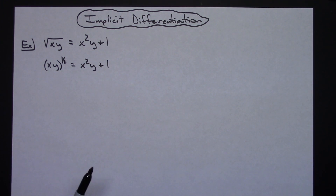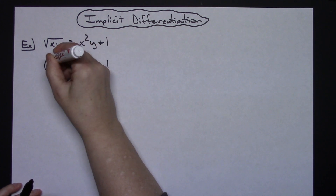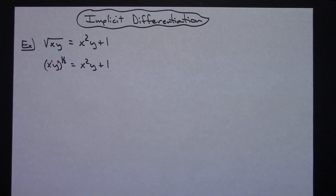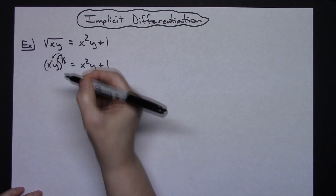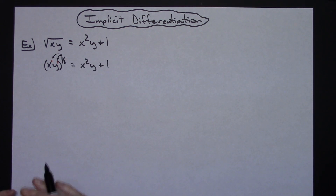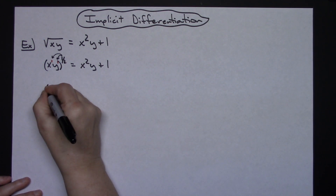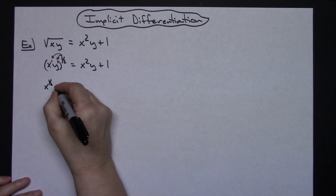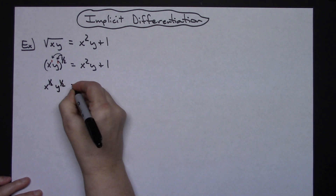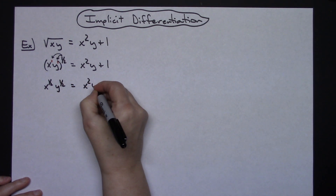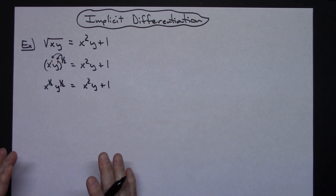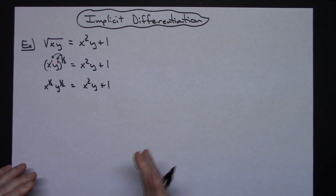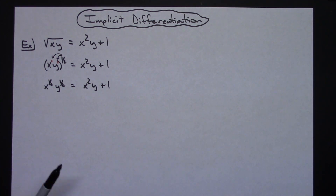On this one I am going to do power raised to a power — I've got a little imaginary 1 exponent right there. I'm going to rewrite this yet again algebraically so that I've got an x to the 1 half and a y to the 1 half. So x to the 1 half, y to the 1 half, and then we've got the x squared y plus 1. Now I have algebraically manipulated this all that I need to — it's going to make the implicit differentiation a whole lot easier.